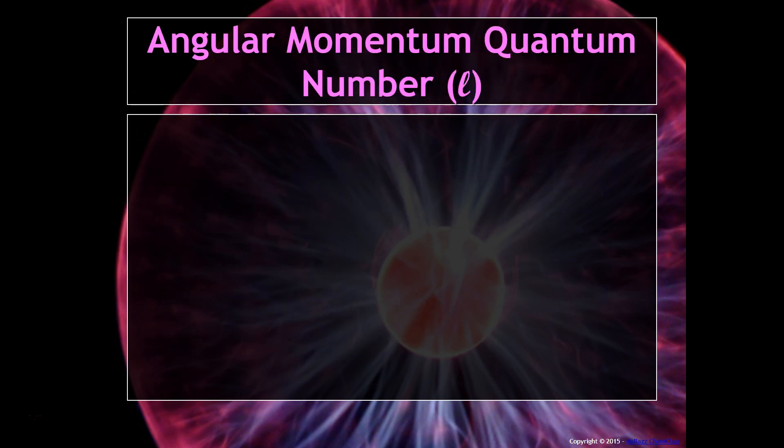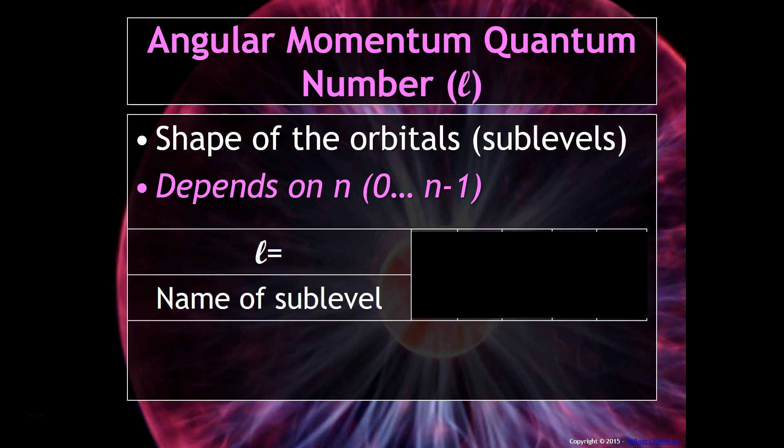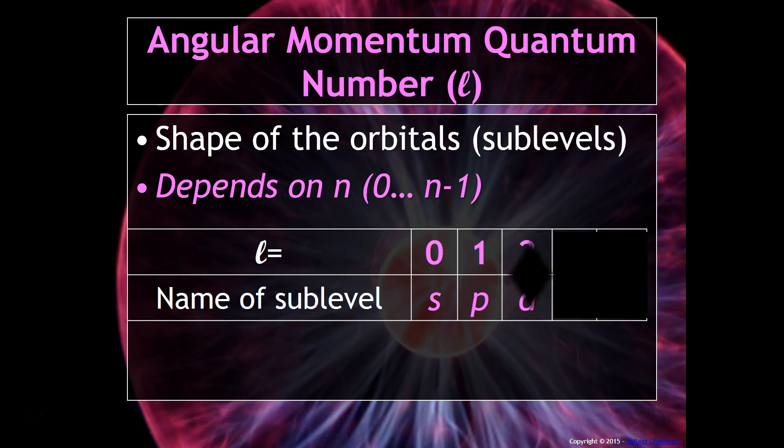Next up is the angular momentum quantum number, or L. This corresponds to the shape of orbitals or sublevels that the electrons are located in. It depends on N. As you know, for example, N will tell you how many sublevels there are. So for example, if your L value is equal to 0, that corresponds to S. If it's equal to 1, that corresponds to P. If it's equal to 2, it corresponds to D. If it's equal to 3, that's F. And 4, that's G.